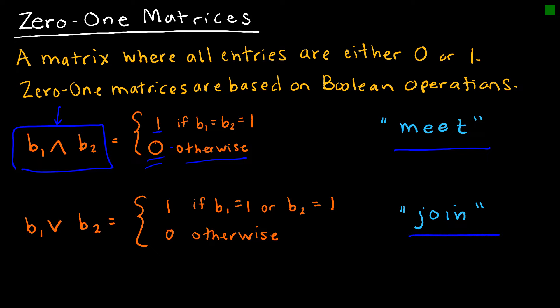The join would be b1 or b2. And again, this should make perfect sense to us because we're used to this OR value where one or the other must be true. So this is saying if b1 equals 1 or b2 equals 1. So if either one is true, it will return a value of 1. Otherwise, we return a value of 0.